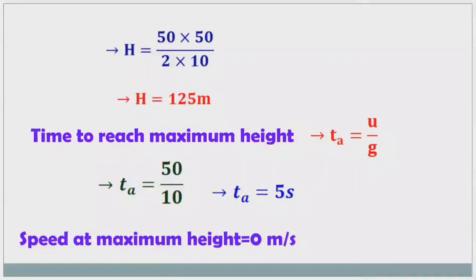Speed at maximum height. When we throw an object to a certain height, its velocity slowly decreases as it goes higher, and finally its velocity becomes zero at maximum height. So the speed at maximum height is 0 m/s.